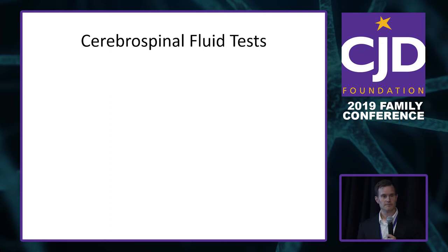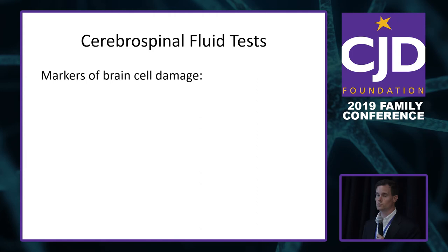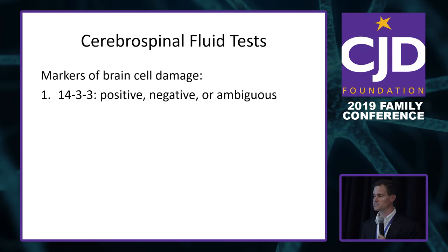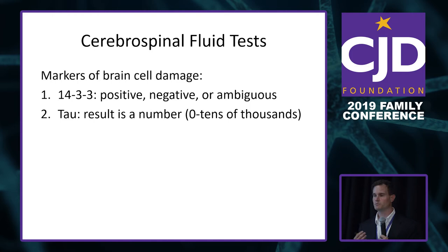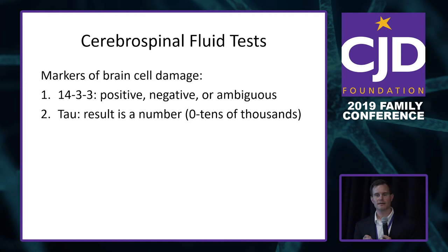For spinal fluid tests, the prion center does three. The 14-3-3 is either positive, negative, or ambiguous — and tau gives a number from zero to tens of thousands, which is more helpful: normal tau is about 200, Alzheimer's is 300–500, but prion disease tends to be in the thousands. However, these are just markers of brain cell damage — they can be positive in seizure disorders, head injury, or rapidly progressive Alzheimer's, so they're not specific for prion disease.